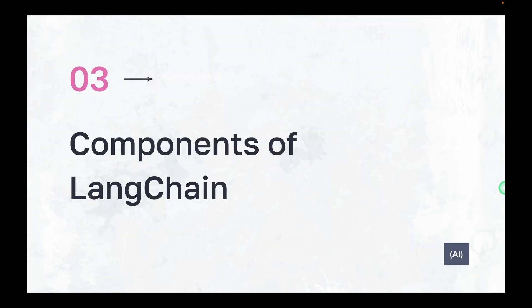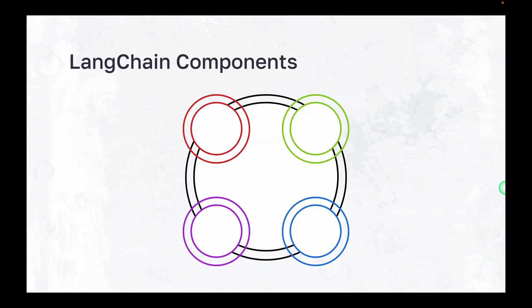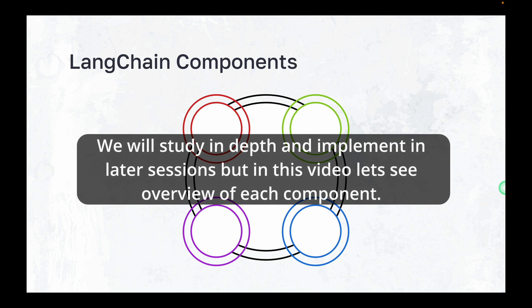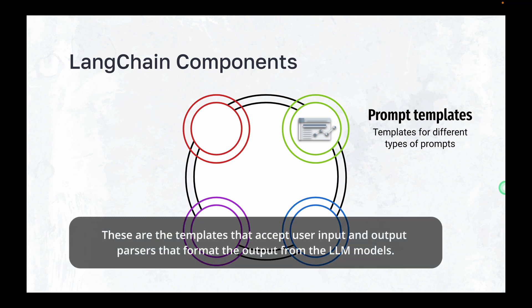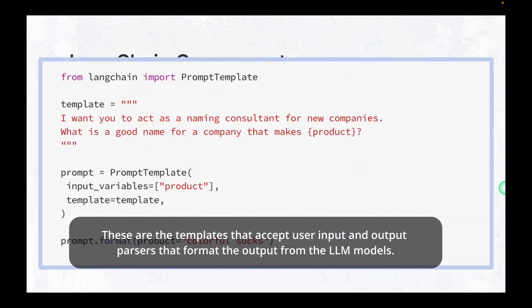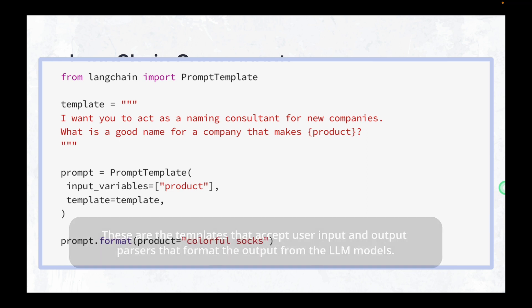Now let's have a look at all the important components of LangChain. There are total four components of LangChain. We will study in depth and implement in later sessions, but in today's video, let's see an overview of each and every component. The first component is called prompt templates. These are the templates that accept user input and output parsers that format the output from the LLM models.